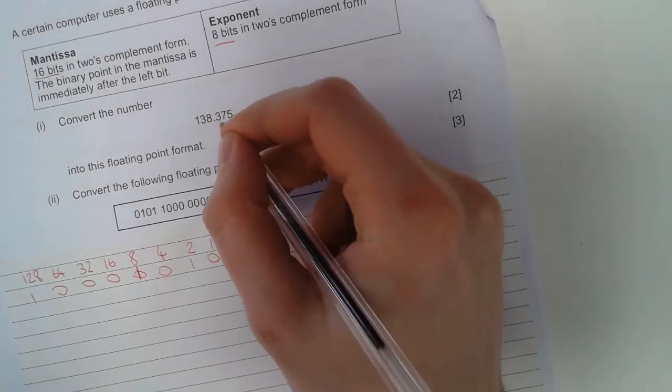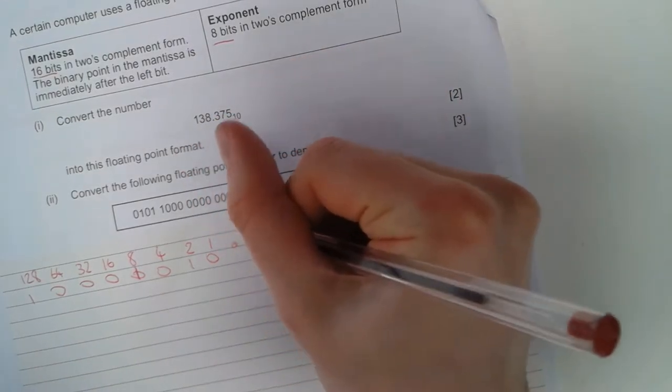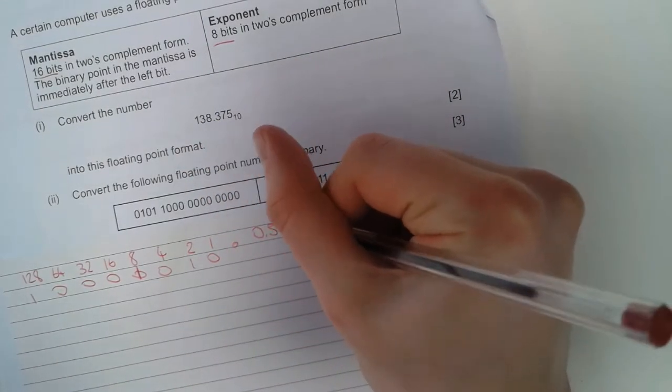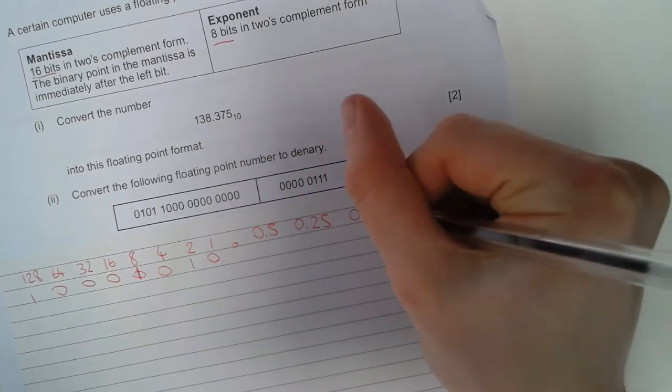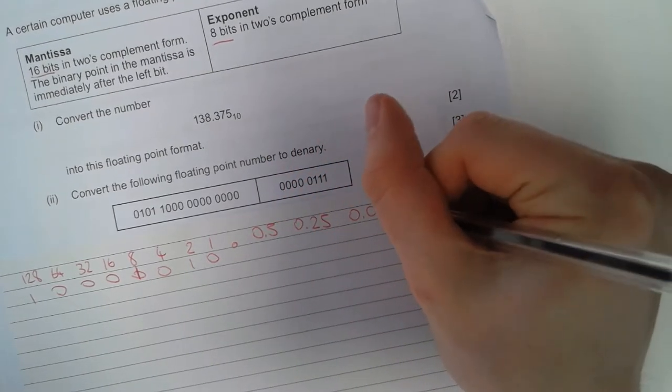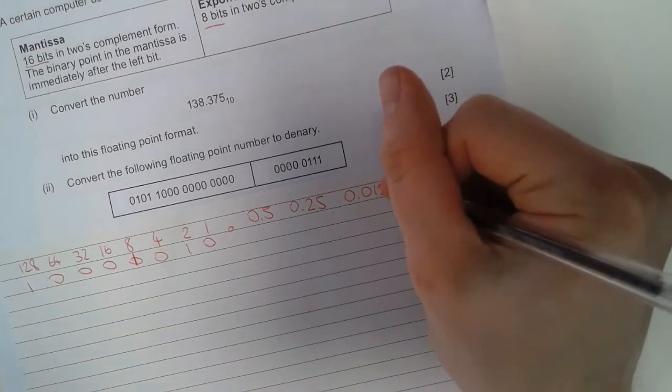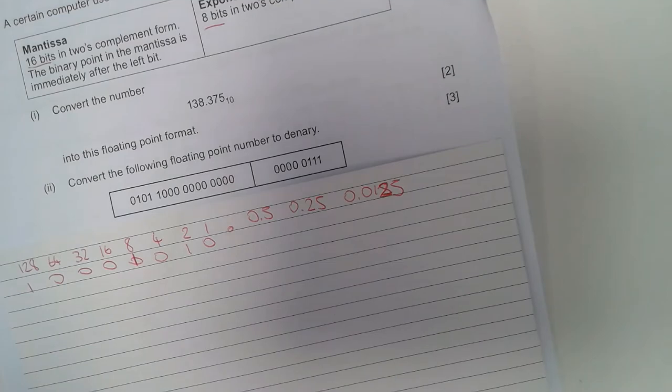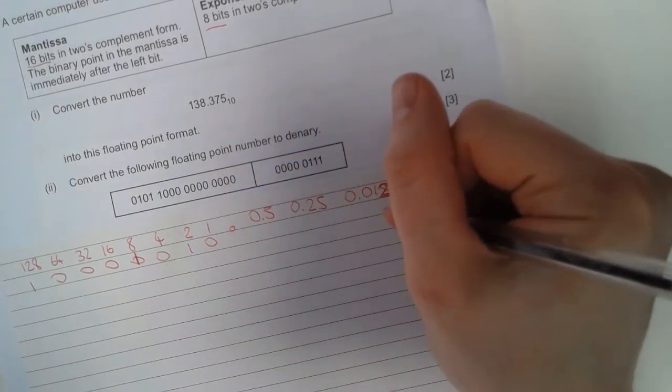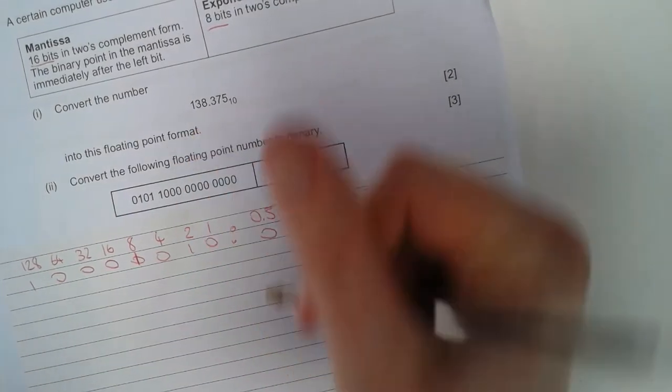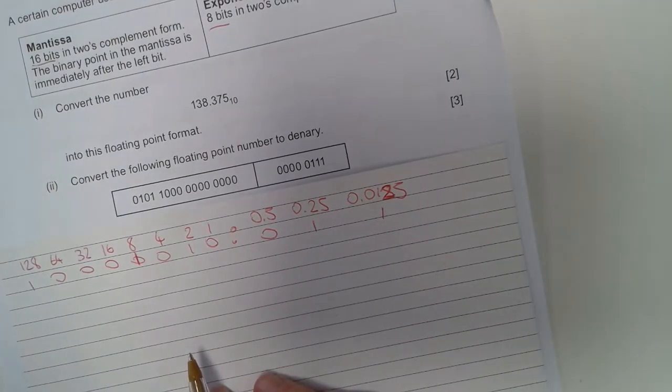The next bit is .375, so 0.5, 0.25, and 0.125. And there we have it.